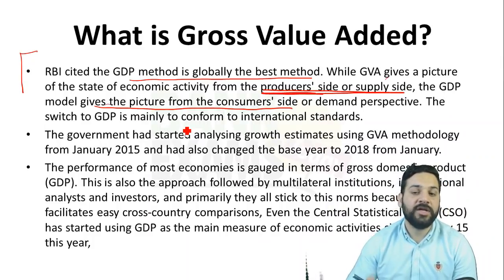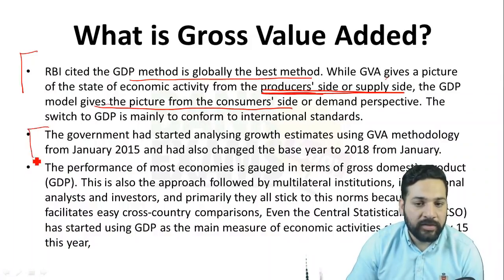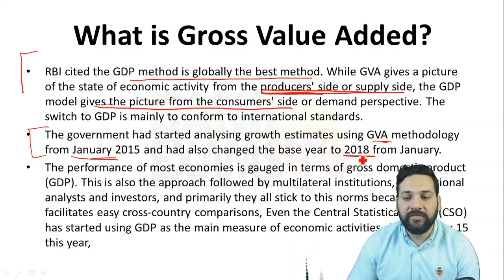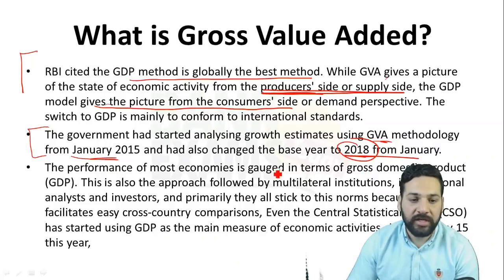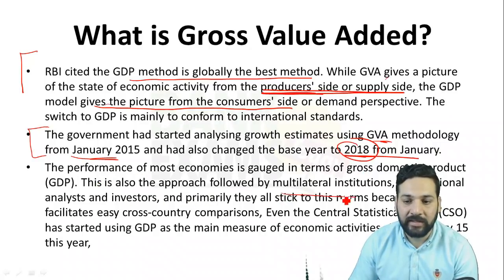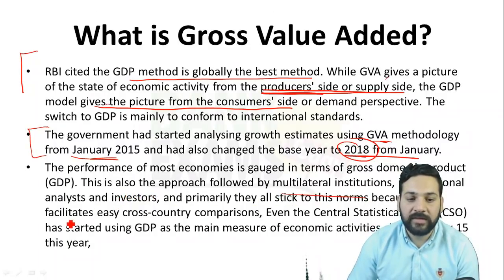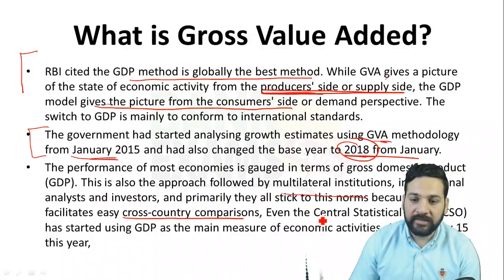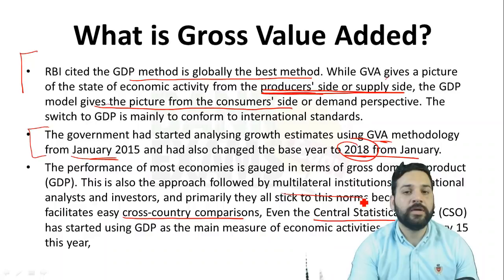The government had started analyzing growth estimates using the GVA method from January 2015 and also changed the base year — the new base year is 2018 from January 2018. The performance of most economies is gauged in terms of GDP. This is the approach followed by multilateral institutions, international analysts, and investors, as it facilitates easy cross-country comparison. Even the Central Statistical Office had started using GDP since January of this year.